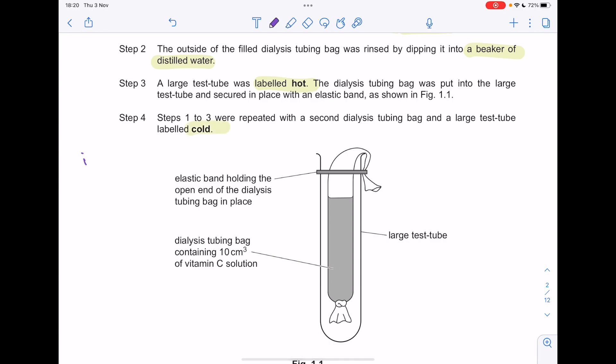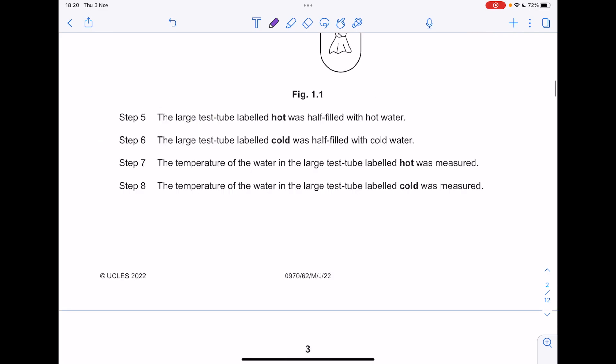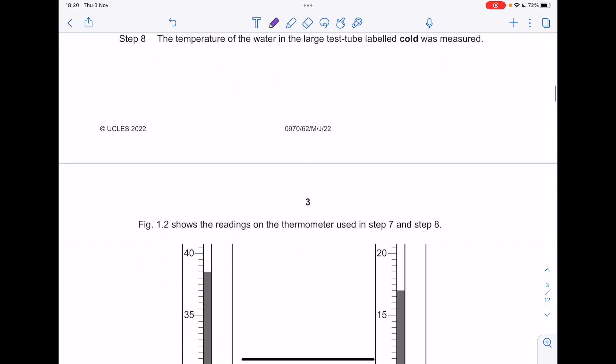Steps 1 to 3 were repeated with a second dialysis tubing bag and a large test tube labeled cold. So we can already see the thing we're changing, so our independent variable is the temperature. The large test tube labeled hot was half filled with hot water. The large test tube labeled cold was half filled with cold water. The temperature of the water in both test tubes was measured.